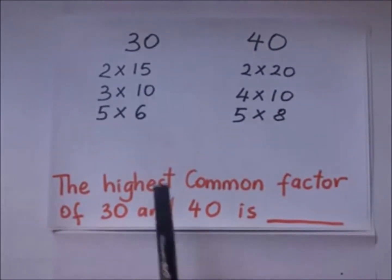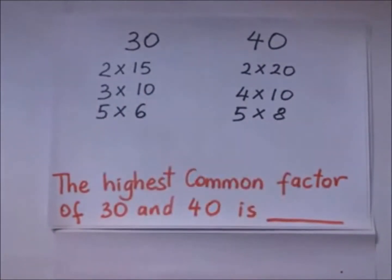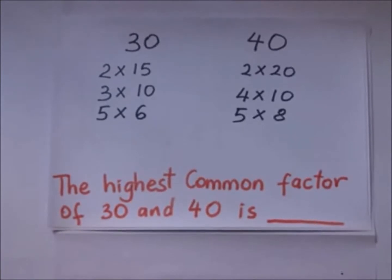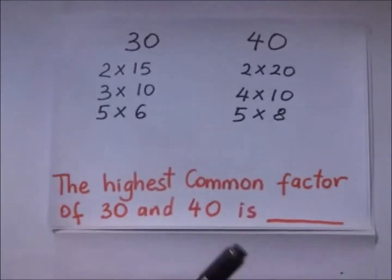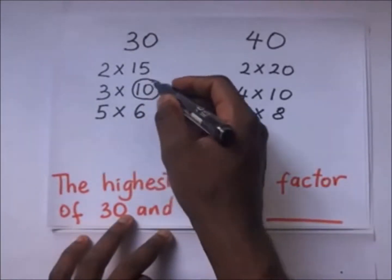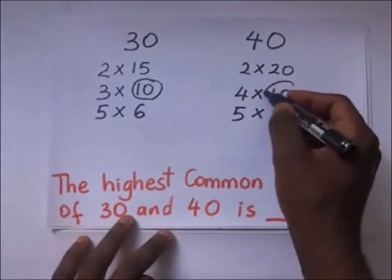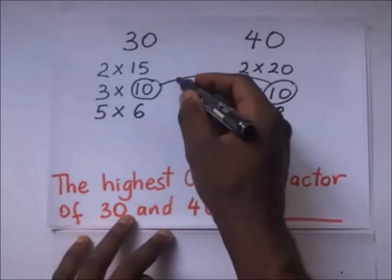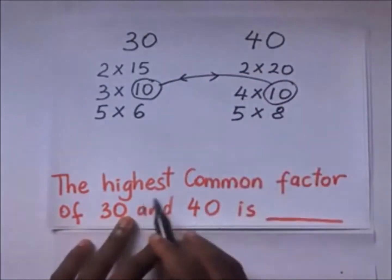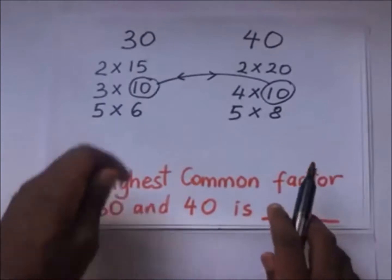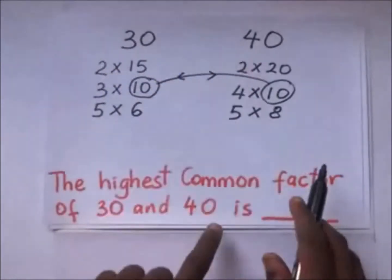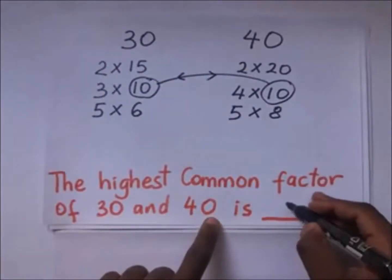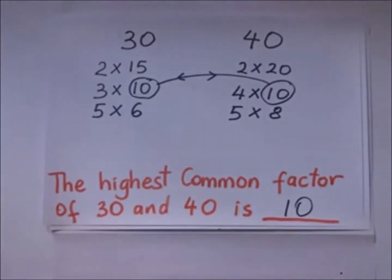The highest common factor: when you analyze the factors of 30 and the factors of 40, you realize that the highest common factor of 30 and 40 is 10. So the highest common factor between 30 and 40 is 10.